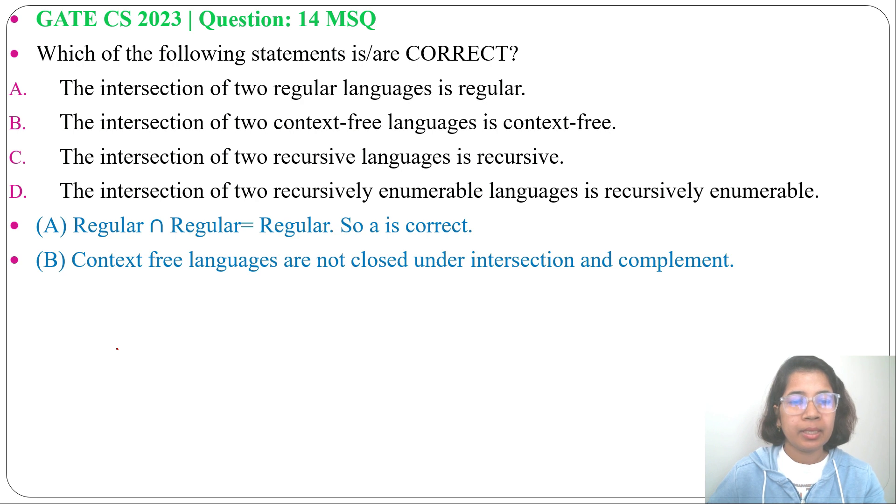Next, option C: The intersection of two recursive languages is recursive. This is true. Recursive language is closed under intersection.